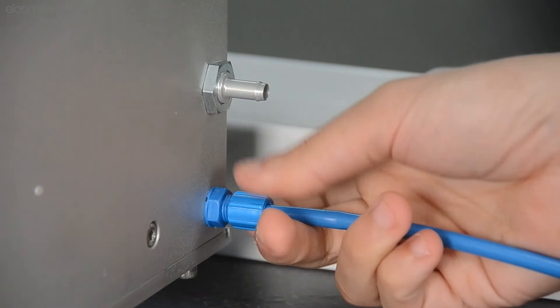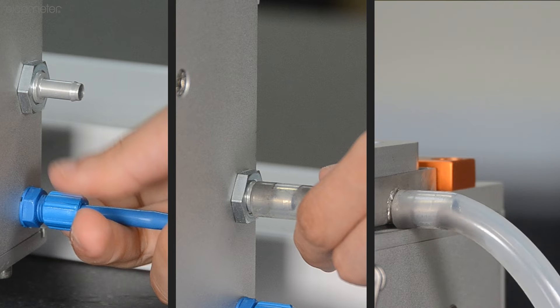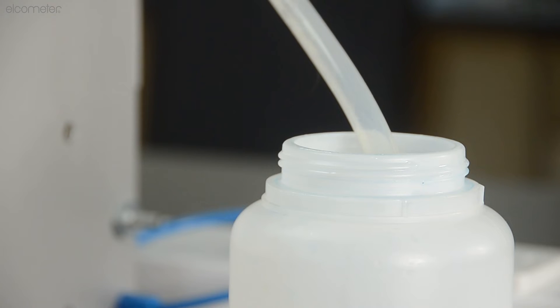Next, connect the drain pipes to the waste tubes also on the right side of the tester, placing the opposite ends into a container suitable for liquid waste.